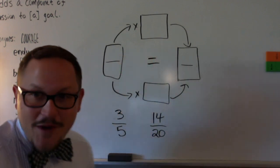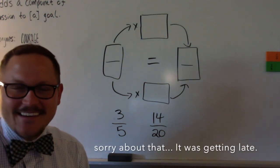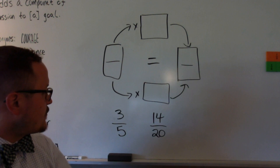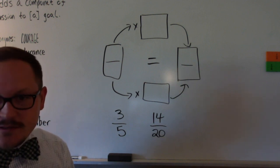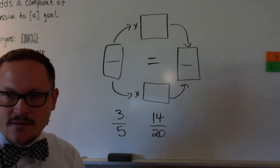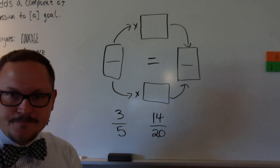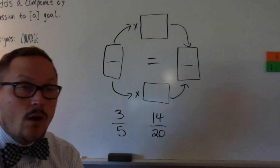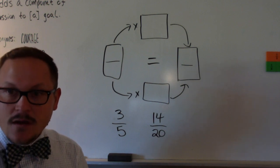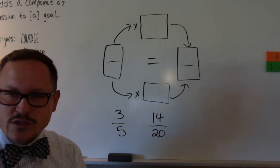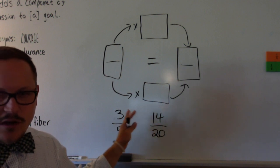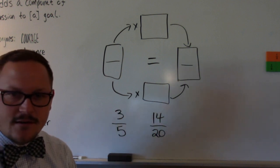In this scenario I'm trying to compare 3/5 and 14/20. Like, if I said: I'm going to give you 3/5 of this pizza, or I can give you 14/20 of this pizza — what would you like? Which one of these portions would you prefer, 3/5 or 14/20?